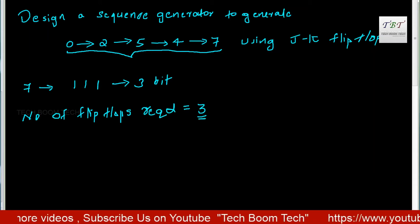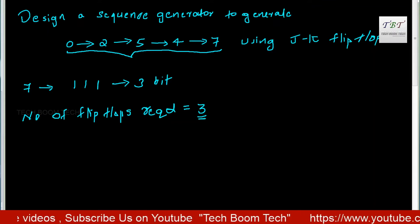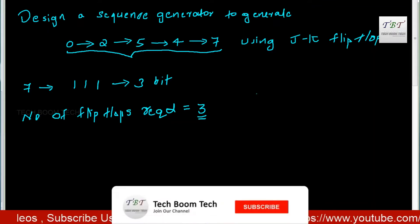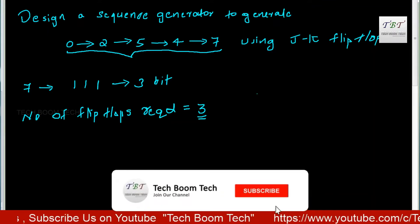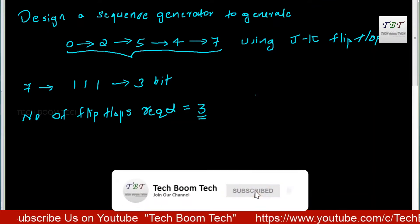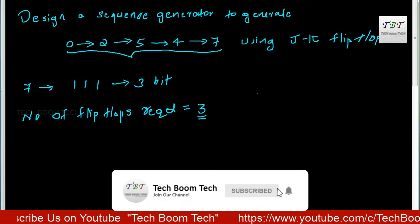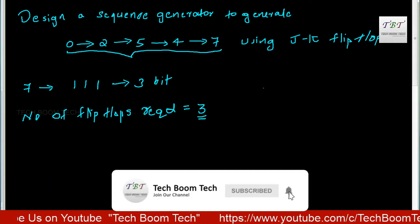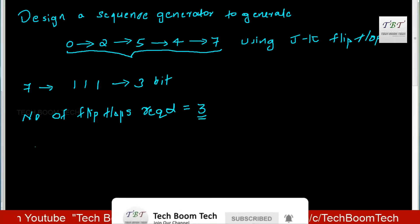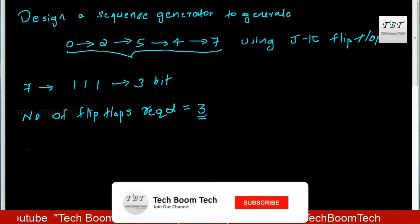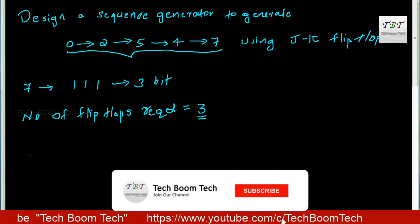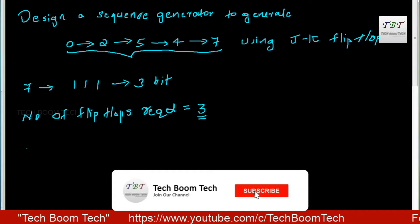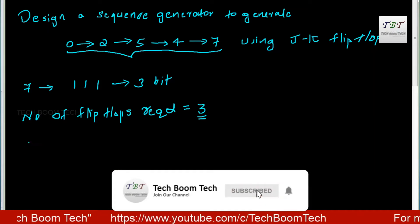We have identified that the number of flip-flops is equal to 3. We will represent the flip-flop states. The first count is 0.